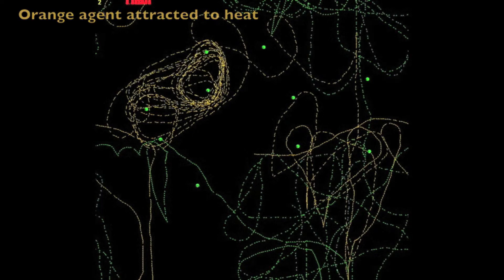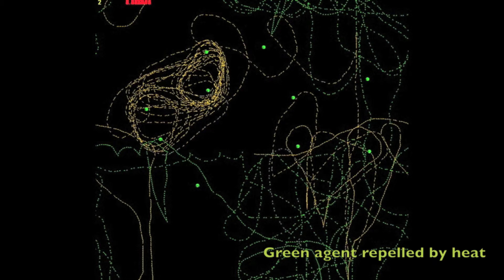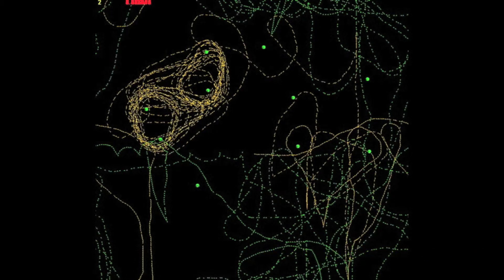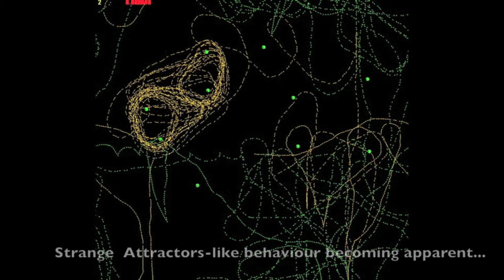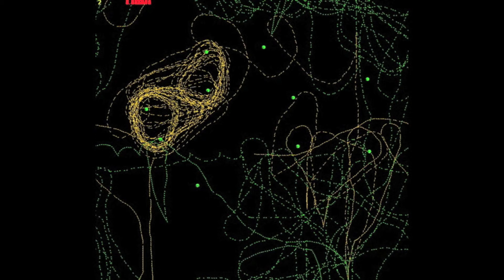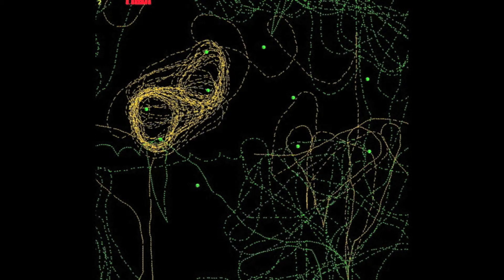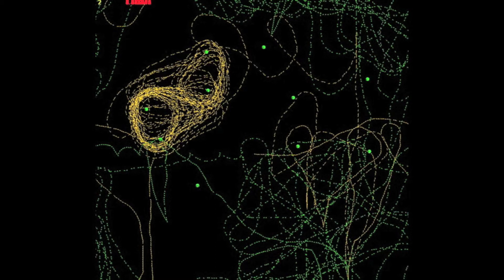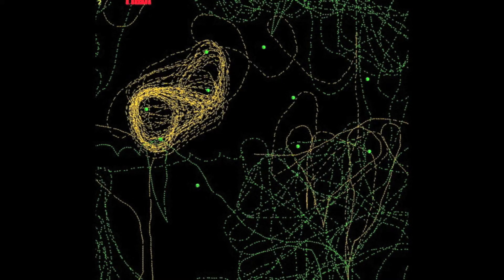And the green agent, they are repelled by it. And you notice that at a certain point, when the orange agent and the green agent are close to one another, the green agent is also repelled by the orange agent because the orange agent is sort of a predator and the green agent is a prey.